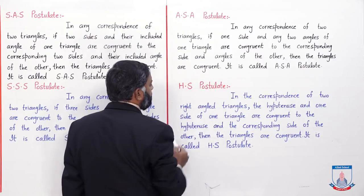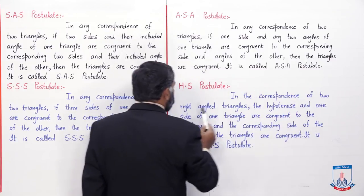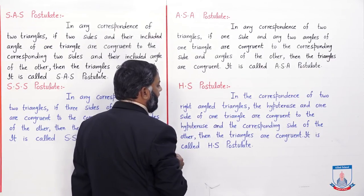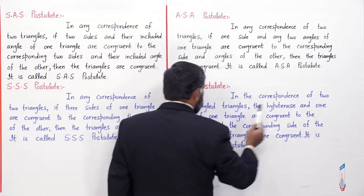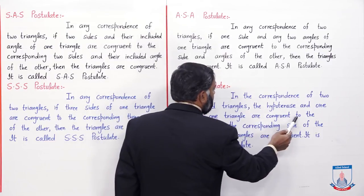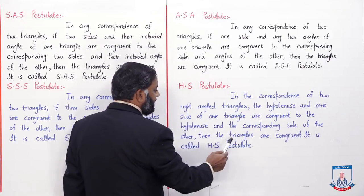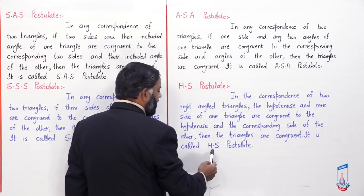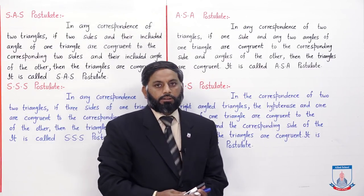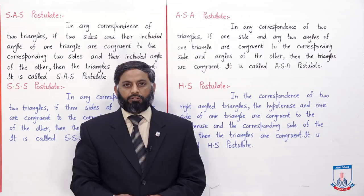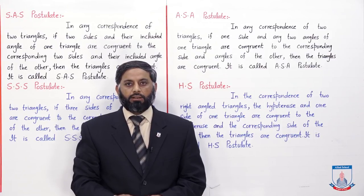Last definition: HS postulate. In the correspondence of two right-angled triangles — HS postulate ke liye right-angled triangles hona zaroori hai — the hypotenuse and one side of one triangle are congruent to the hypotenuse and the corresponding side of the other, then the triangles are congruent. It is called HS postulate.